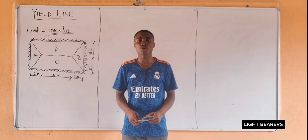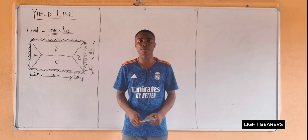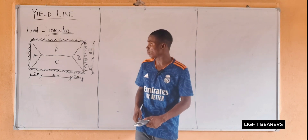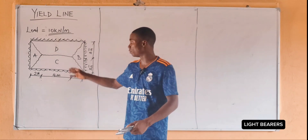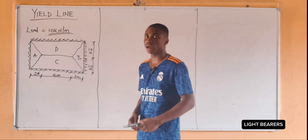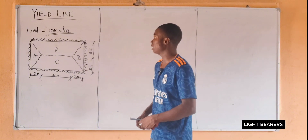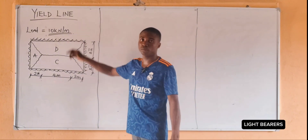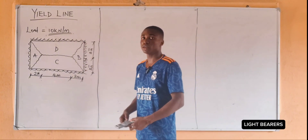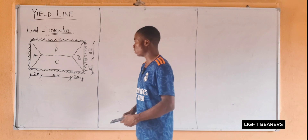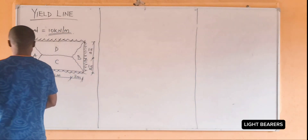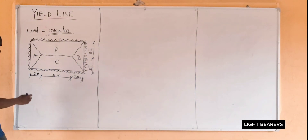Hello and welcome to LightBRS. Today we will determine the moment of this slab, given that our load is 10 kilonewtons per meter. First of all, let's draw the collapse mechanism of this slab.